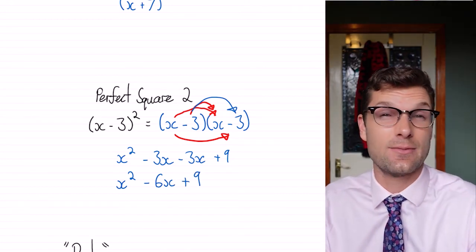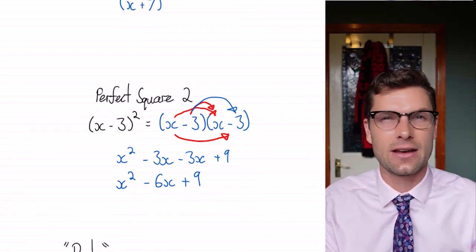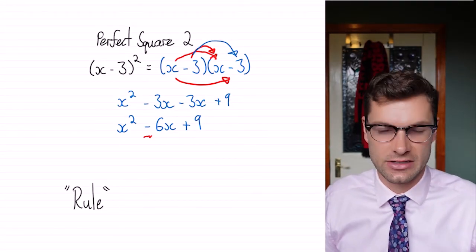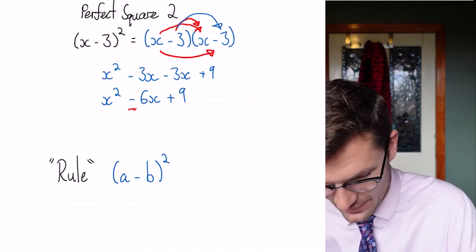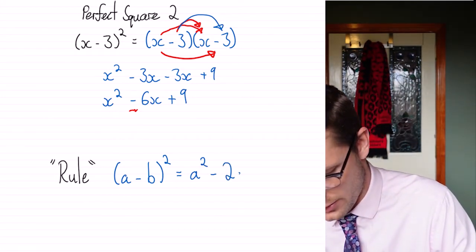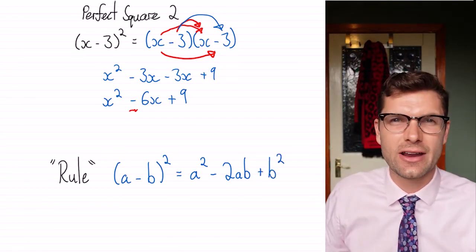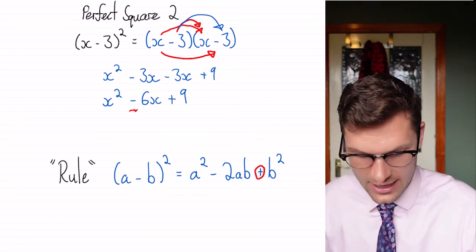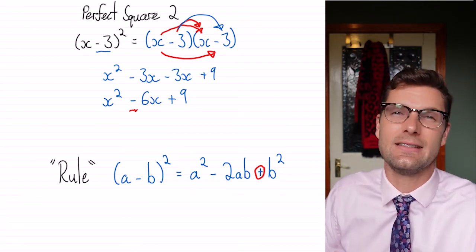So this looks exactly the same as kind of what we did before, except instead of having a positive in between the x squared and the first x term, we've got a negative. So the rule here is going to look incredibly similar. So for any a minus b squared, our final answer is going to be the first term squared minus 2 multiplied by the 2 terms plus b squared. And the reason it is that plus at the end there, it's always a plus at the end there, is because the negative 3 multiplies with negative 3. So those two negatives cancel each other out.